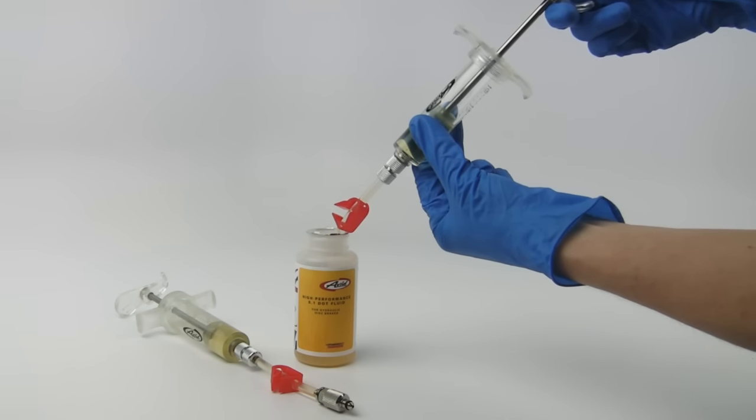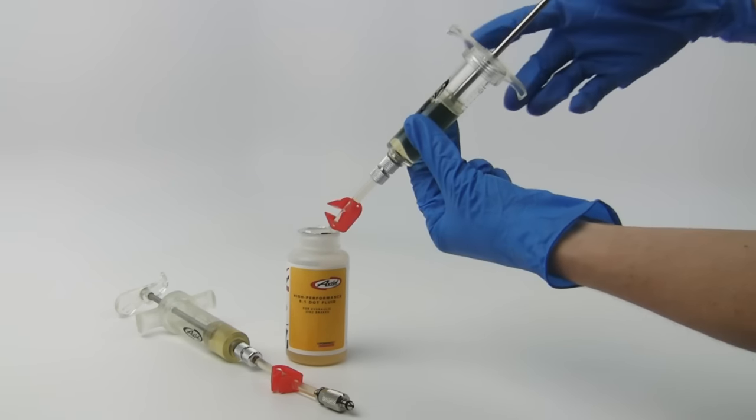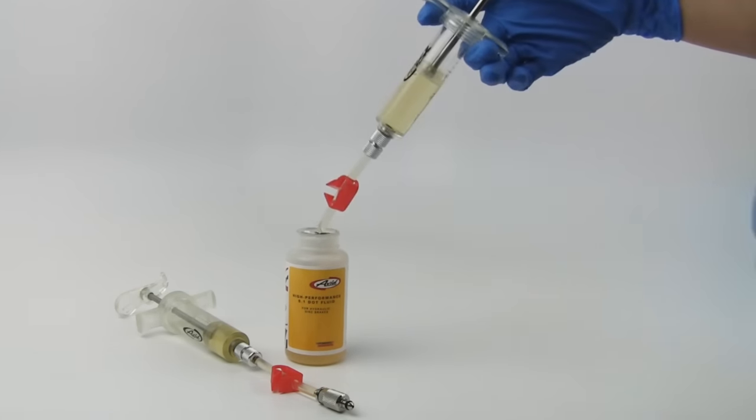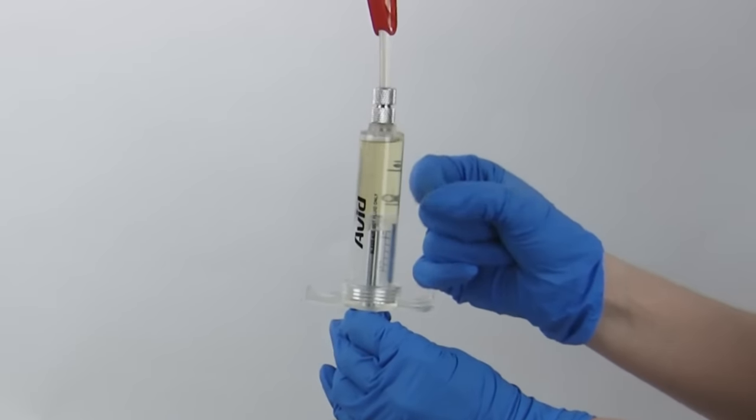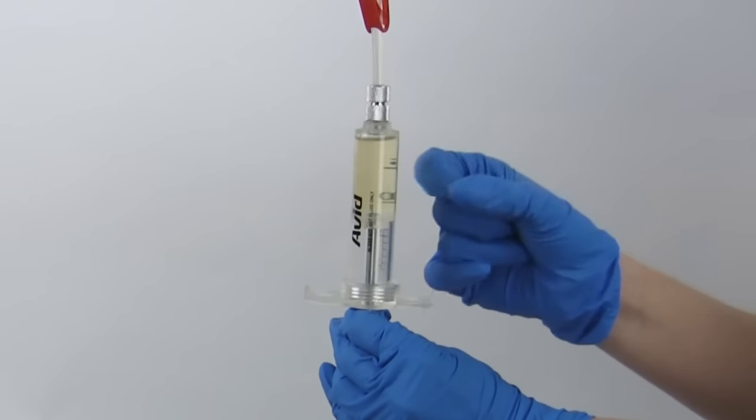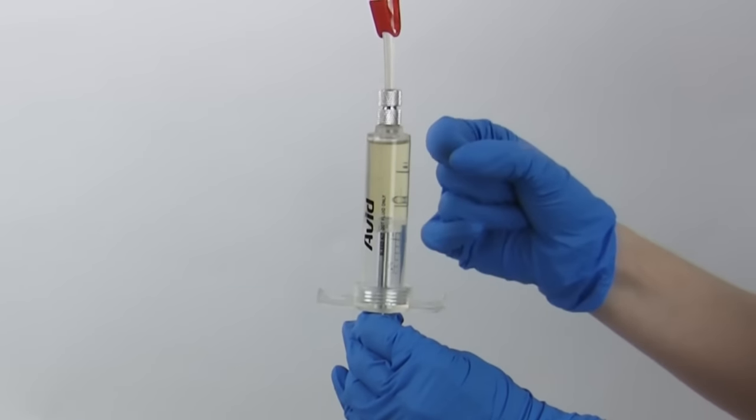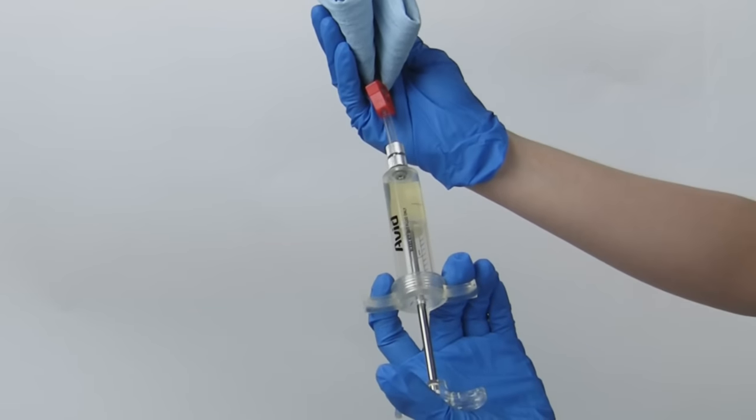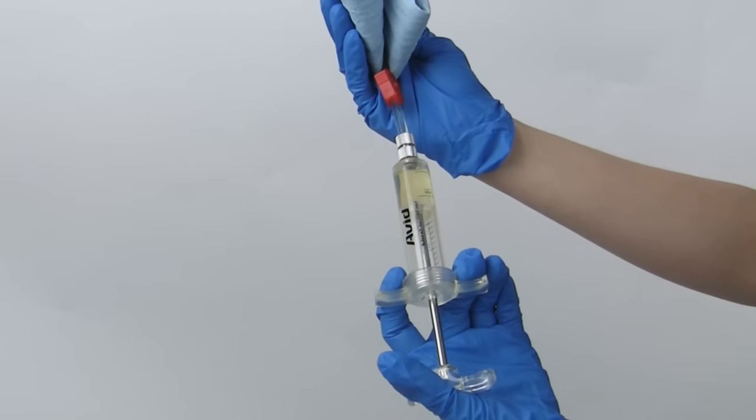Fill a syringe one half full of Avid high-performance DOT fluid and the other syringe one quarter full. Tap the side of the syringe to bring any air bubbles to the top. Place a towel around the tip and slowly push the air bubbles out of the syringe.